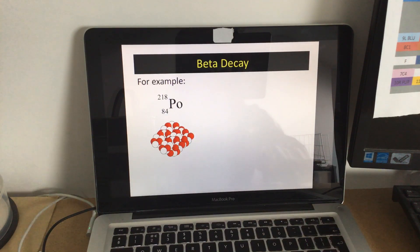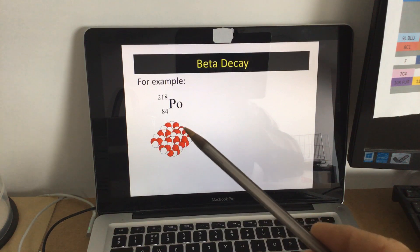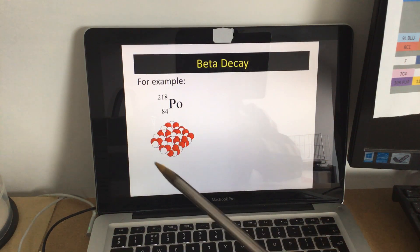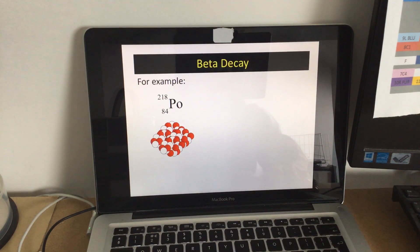And the 218 number, well, we've got the same, although we've got one less neutron and one more proton, the total mass of this is the same. So the big number doesn't change, the mass number.